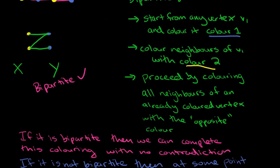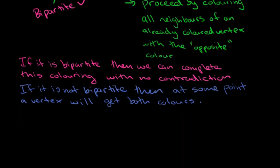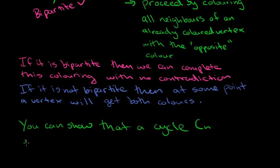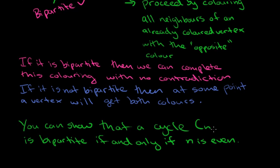So this one here is not bipartite. And if you think about it for a little bit, you can use this technique to actually show that a cycle on N vertices is bipartite if and only if N is even. In other words, you can show that when N is even, it is bipartite, and if N is odd, it is not bipartite. So I encourage you to try showing this using this technique.